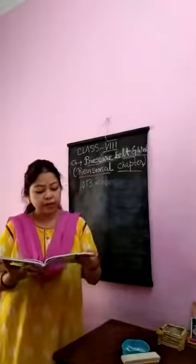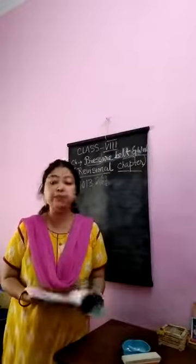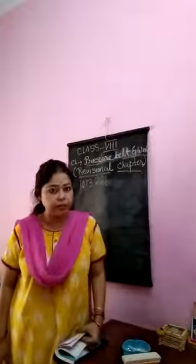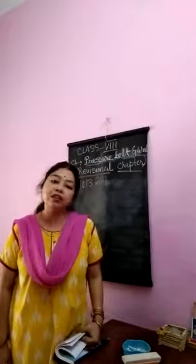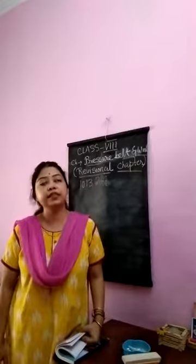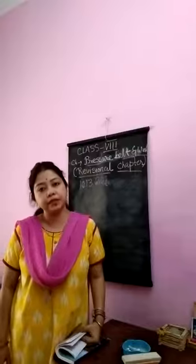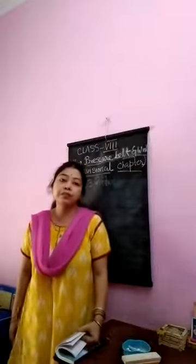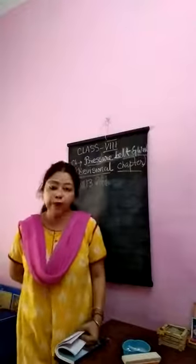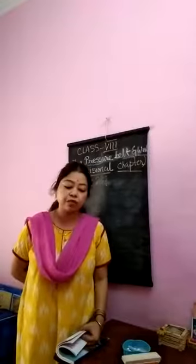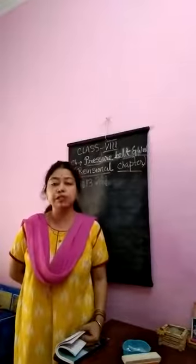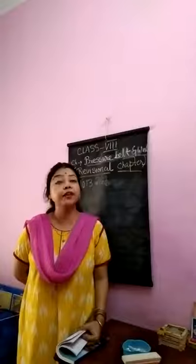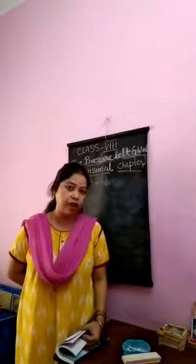The subtropical high pressure belt extends from 30 to 35 degrees north and south. An important feature of this belt is the horse latitude. It is called horse latitude because there is an absence of backing winds, so ships face problems. To reduce the weight of the ship, sailors threw some of their horses overboard while traveling through this latitude, and so this belt is called horse latitude.